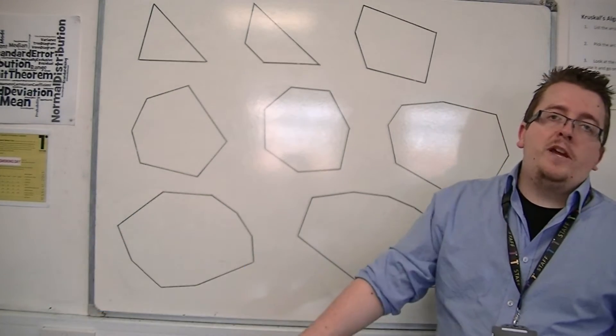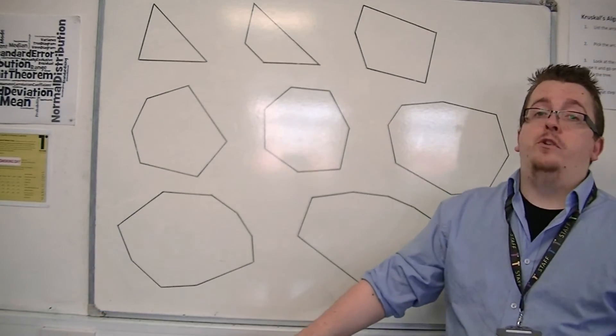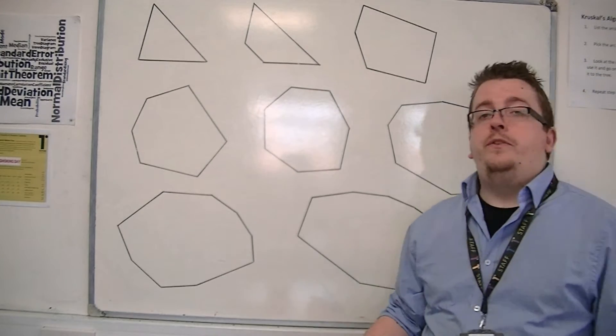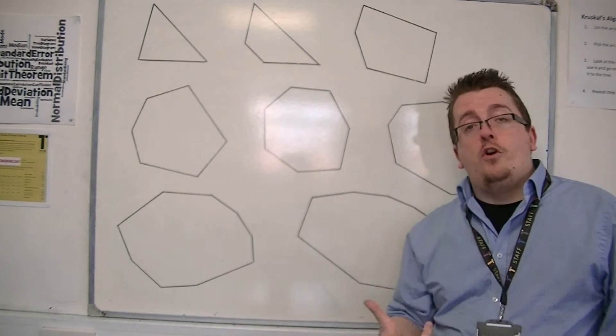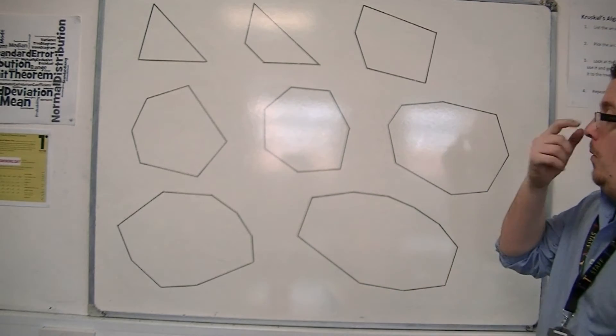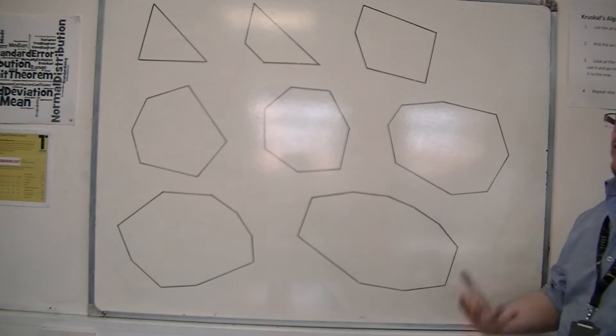OK, so now we're going to be looking at polygons in general. Polygons comes from the word poly, meaning many, and gon, meaning sides. So we're looking at many-sided shapes.